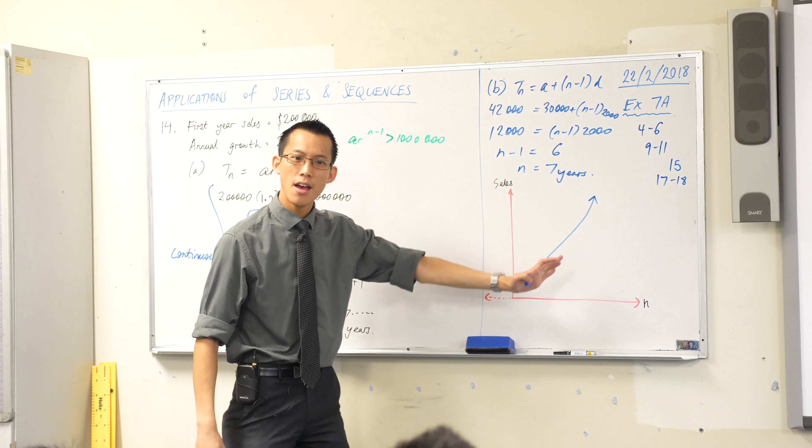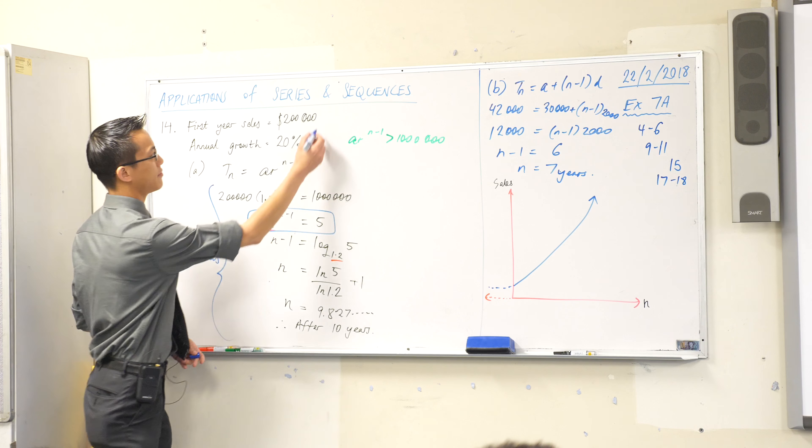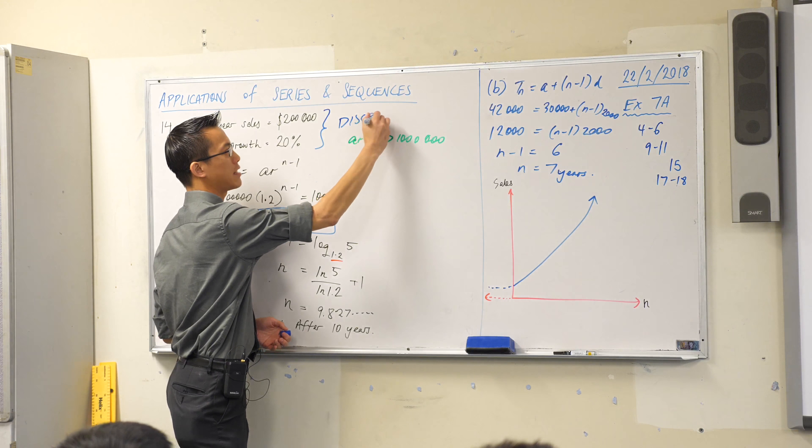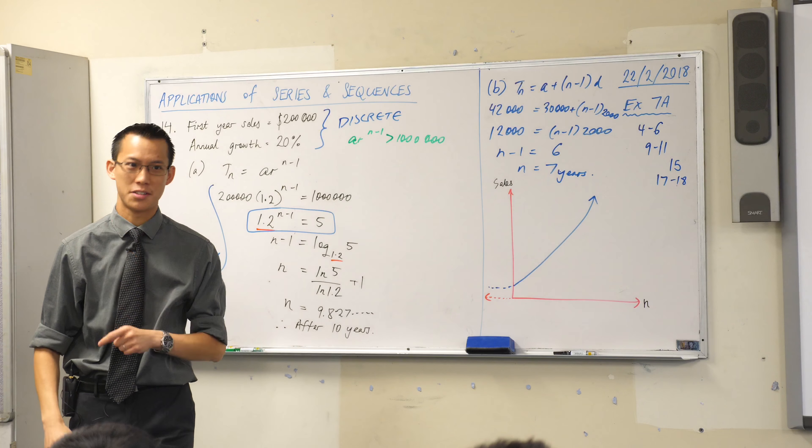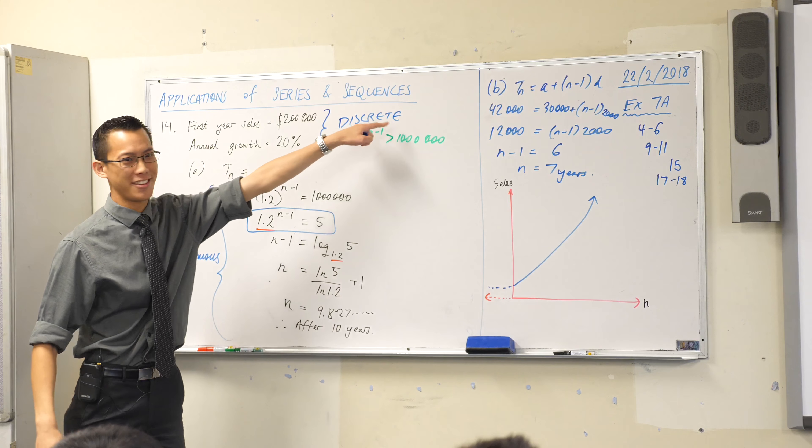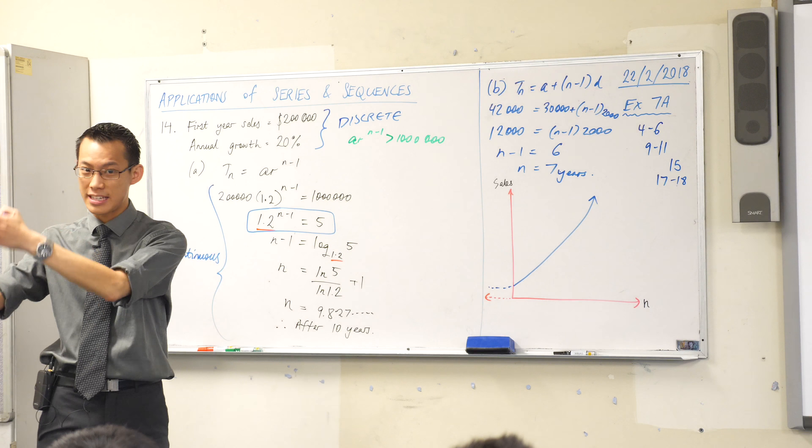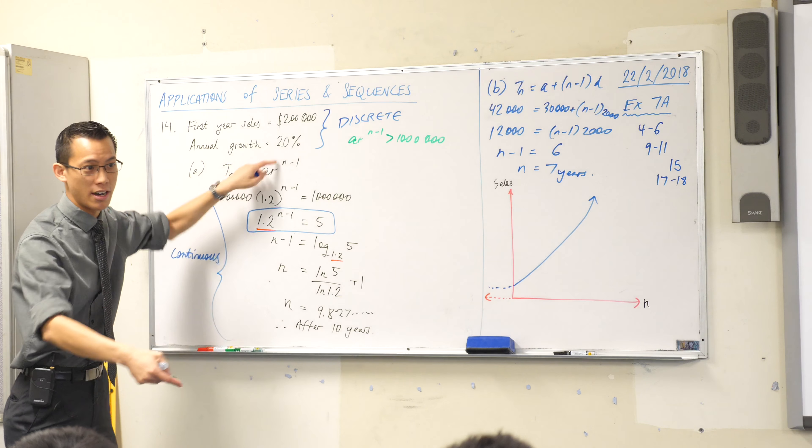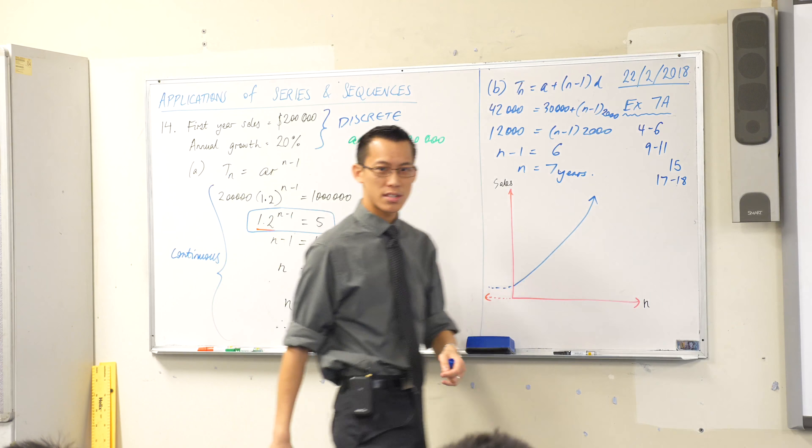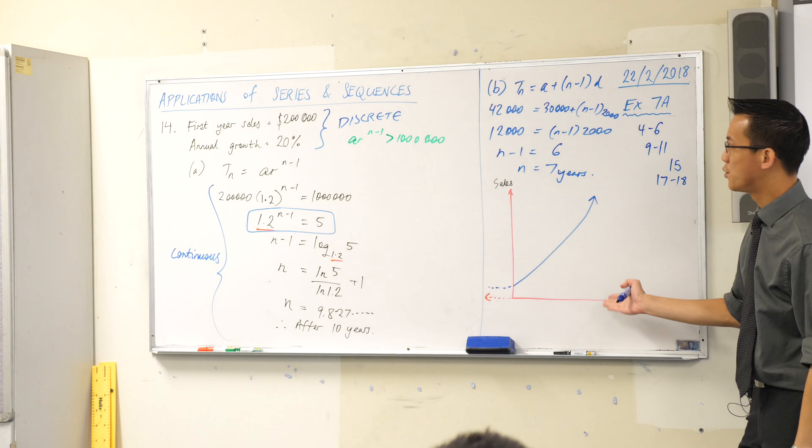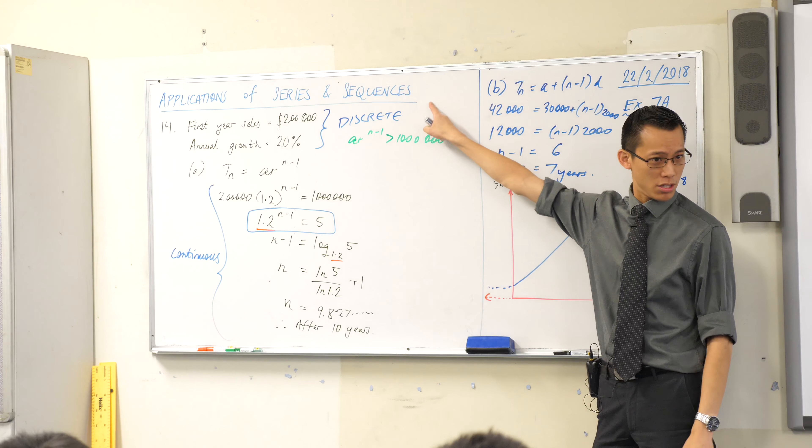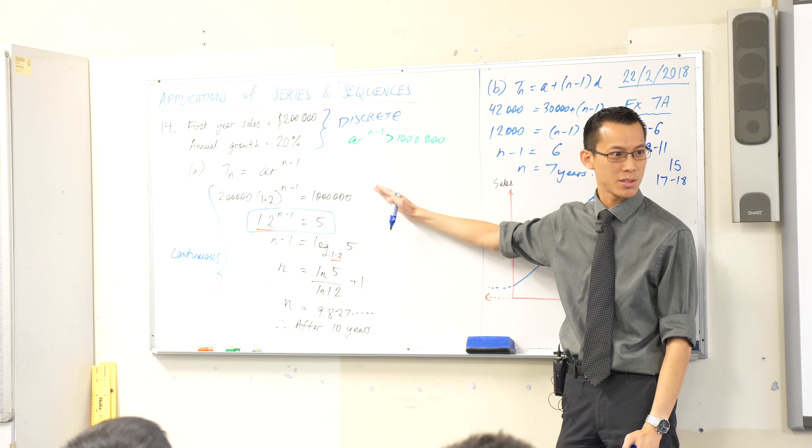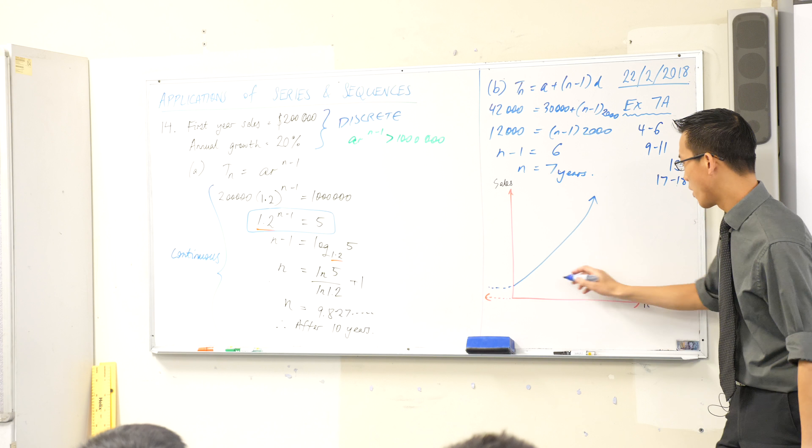But we're using a continuous model to describe a discrete situation. Discrete with two separate E's means it's separated out. You've got integer values, like there's this year, and then there's the next year, and there's no in between. So, we're using this continuous model to describe a discrete situation, and there isn't any exact year where there's exactly a million dollars as you're coming out. If I went 1, 2, 3, 4, 5, 6, 7, 8, 9, 10, etc.